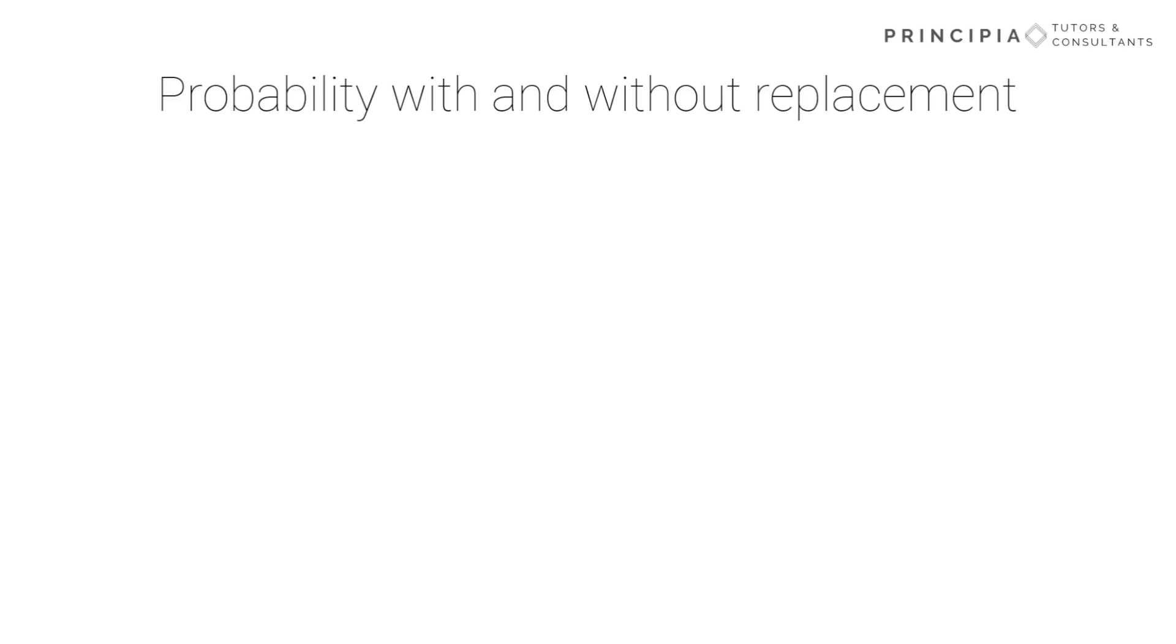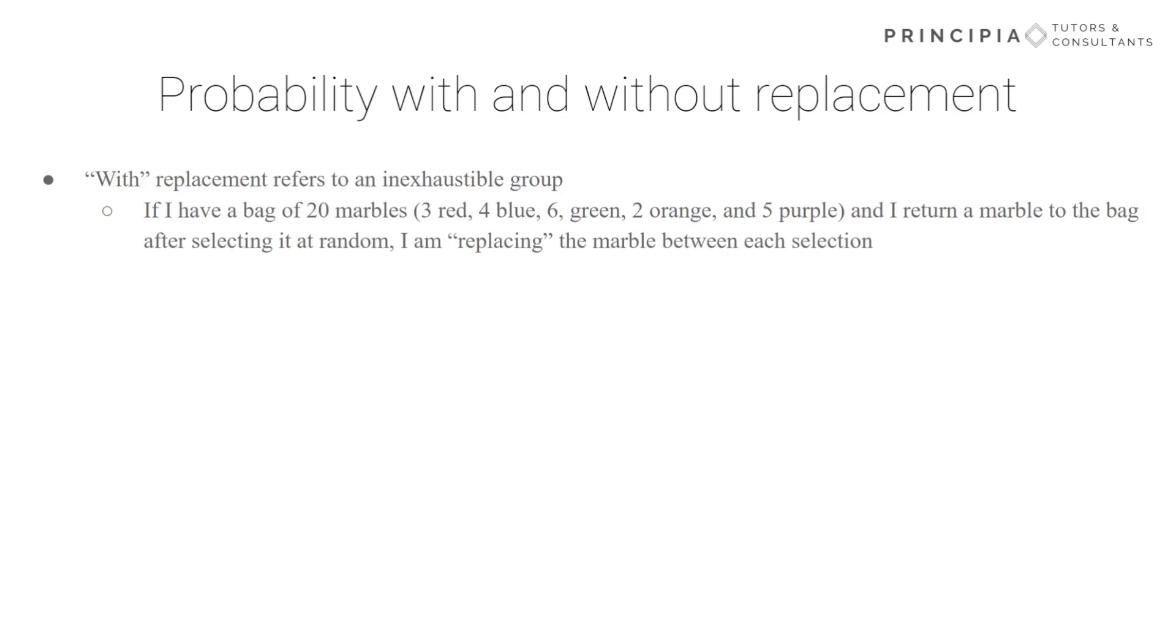Okay, so with and without replacement, what does that mean? When we say probability with replacement, we're referring to an inexhaustible group, and so the numbers don't change. In this example with the 20 marbles in the bag, I start with three red marbles, and the likelihood of drawing a red marble at random is 3 out of 20. Since I replaced the marble in the bag, that likelihood never changes. So the first, second, third, etc. draw will always be 3 out of 20.